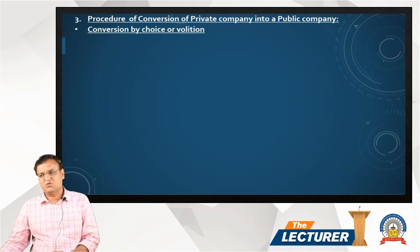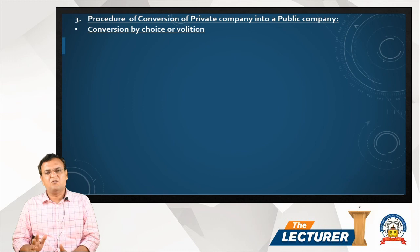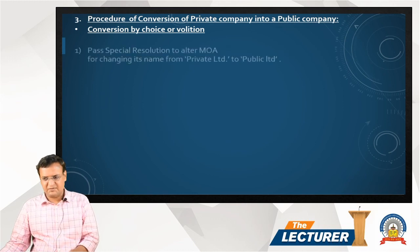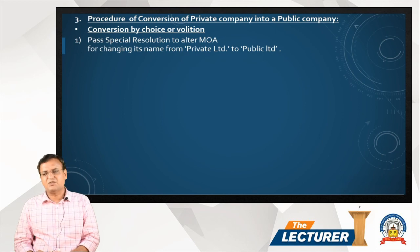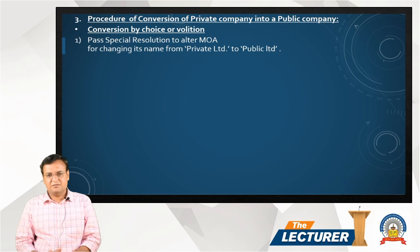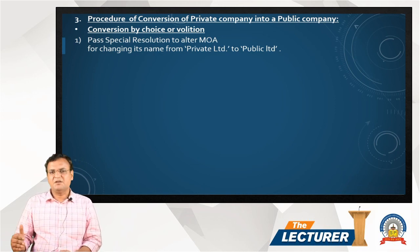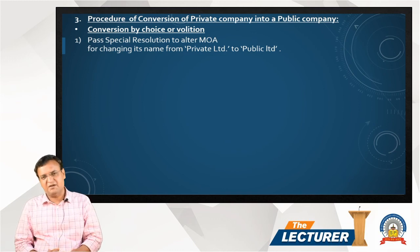First is conversion by choice or volition. If you voluntarily decide to convert your private limited into a public limited company, the first step required is to pass a special resolution to alter the Memorandum of Association. In the name clause of the memorandum we have written the name of the company using the word 'Private Limited', so we are required to remove the word 'Private' from the name of the company.